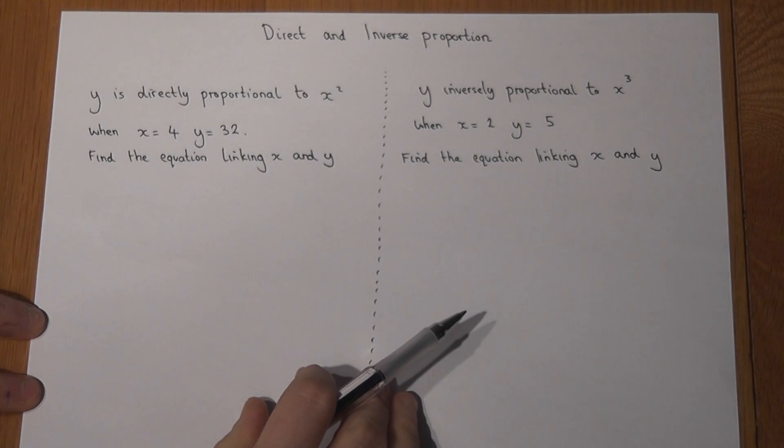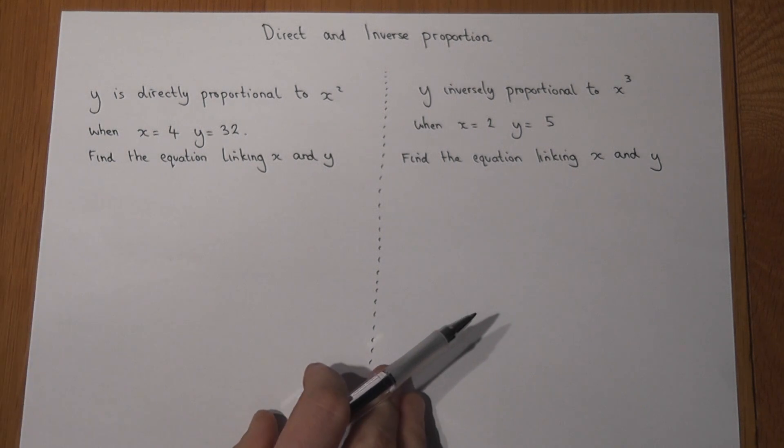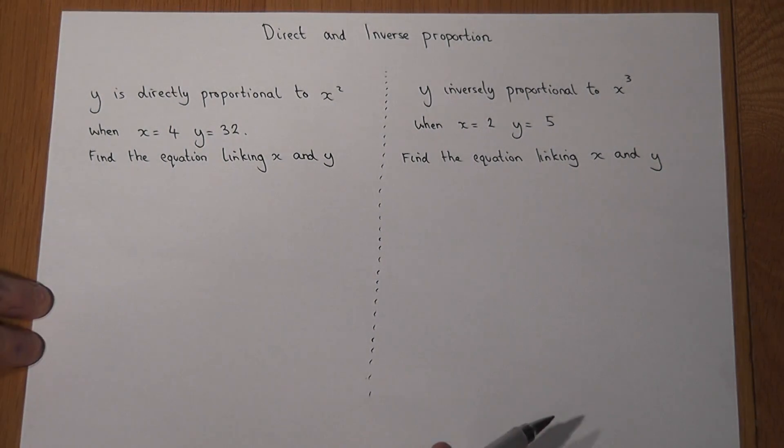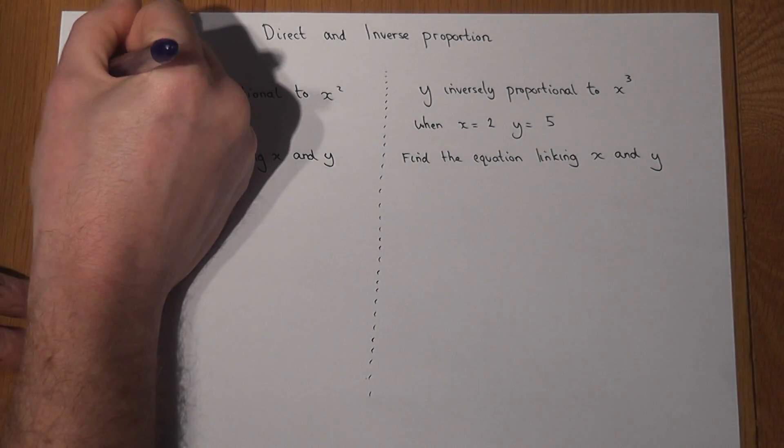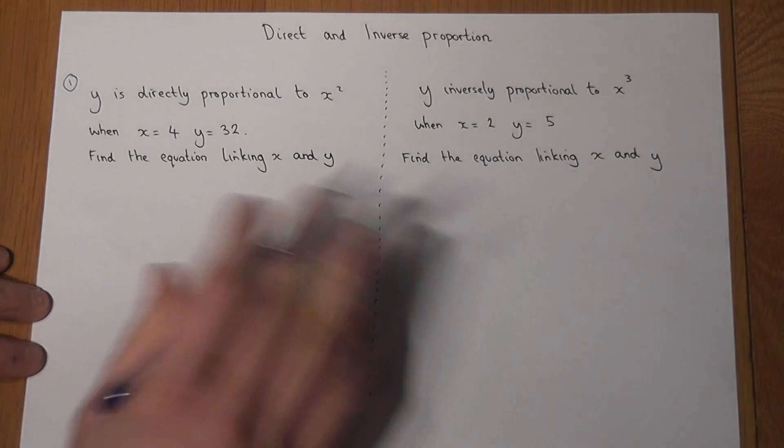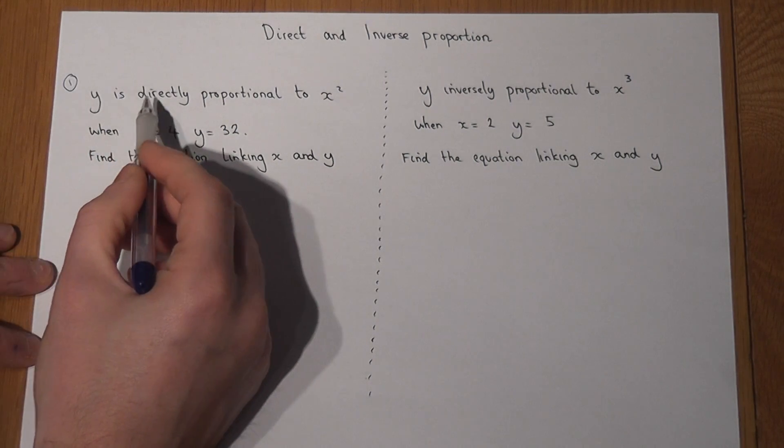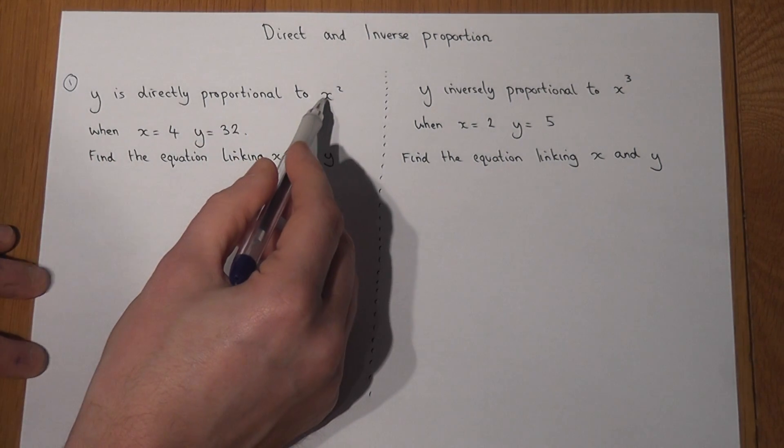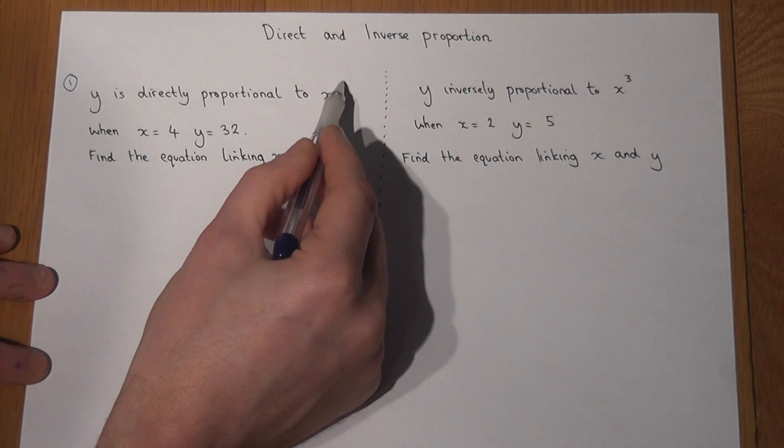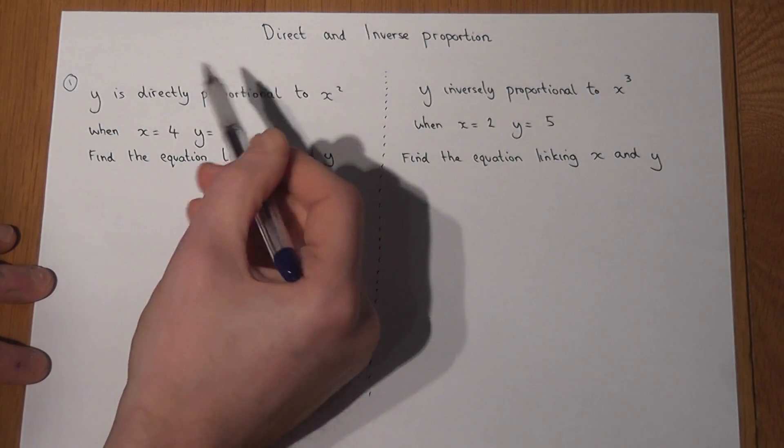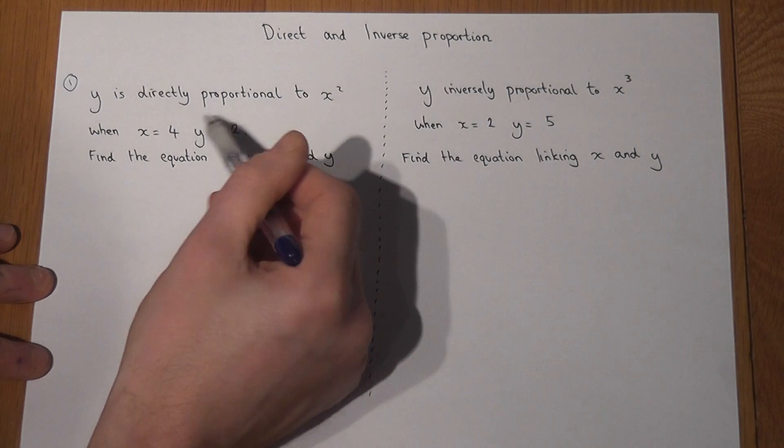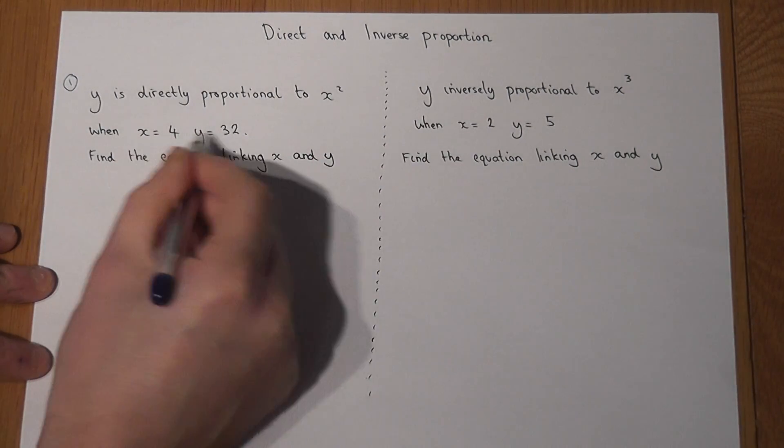This video reviews proportion and talks through a way to find equations linking two variables. The first example is about direct proportion, and we're told that y is directly proportional to x squared. That power can change, but in this example we're told it's x squared, and we're given some numbers.